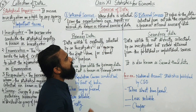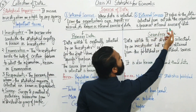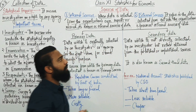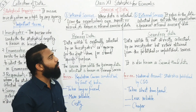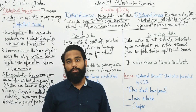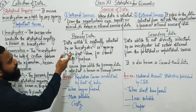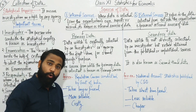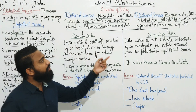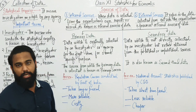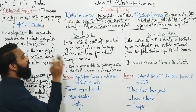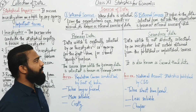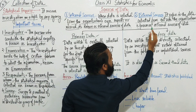The second source is external source, which refers to data collected from outside the organization. In internal sources, we collect data from the organization's own records and reports, but in external sources we go outside the organization to collect the data. External sources are further categorized into two more sources: primary data and secondary data.